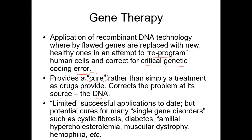There was some early success in the 1990s with severe combined immunodeficiency syndrome (SCID) and some other conditions. Most of the drive has been for single gene disorders — where one single gene has a problem. That includes cystic fibrosis, muscular dystrophy, familial hypercholesterolemia, hemophilia A, hemophilia B, and many others. Diabetes may involve many different genes and mutations, so it may not be just a single gene disorder, but most of the work has focused on single gene disorders.